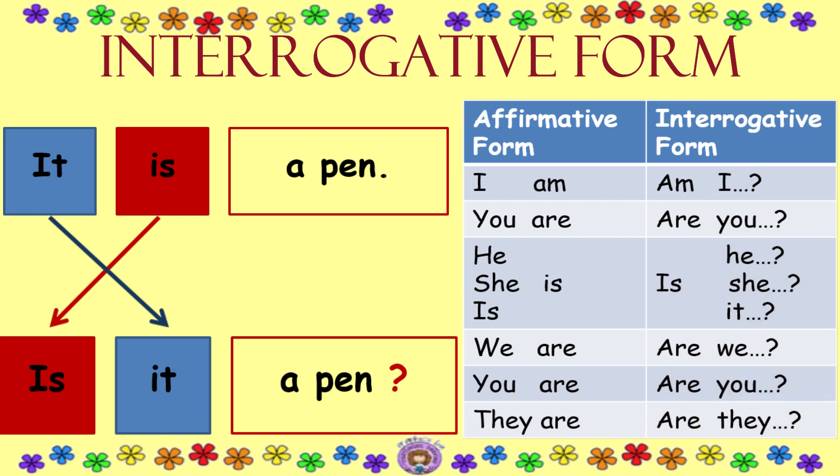The verb to be with all pronouns in interrogative form: I am → am I. You are → are you. He is → is he. She is → is she. It is → is it. We are → are we. You are → are you. They are → are they.